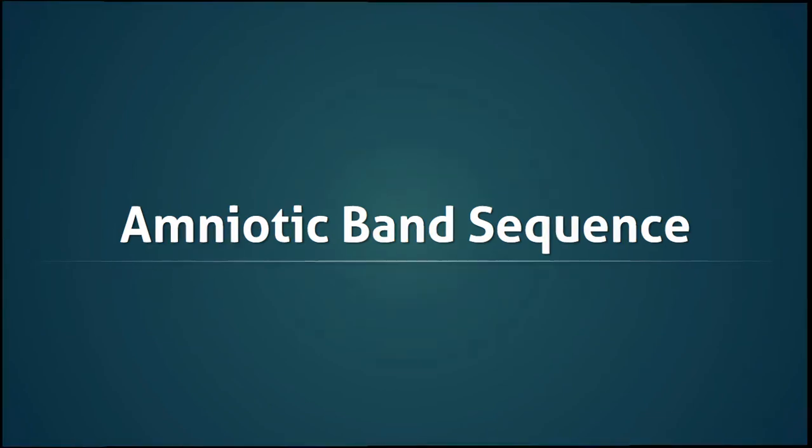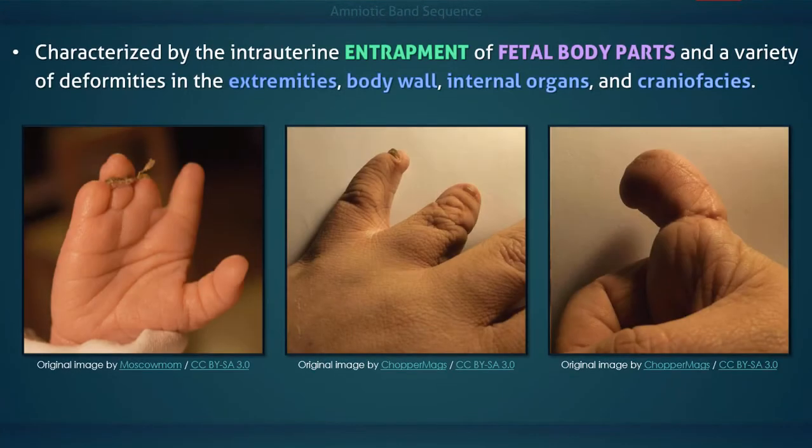Amniotic Band Sequence. During intrauterine life, the entrapment of fetal body parts in fibrotic amniotic bands can cause deformities in the extremities, body wall, internal organs, and cranial face.